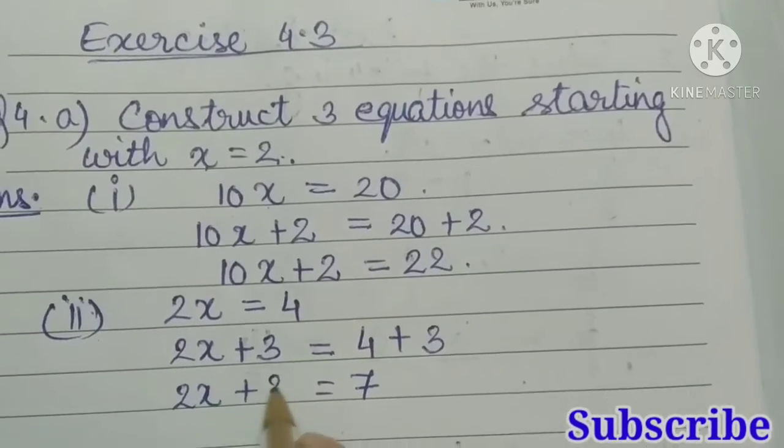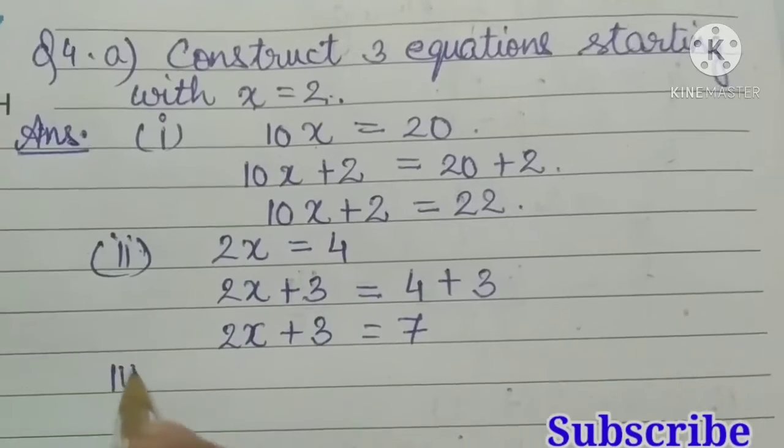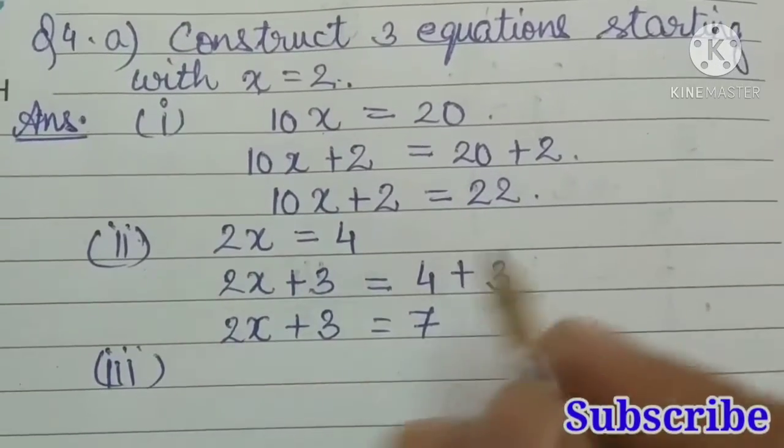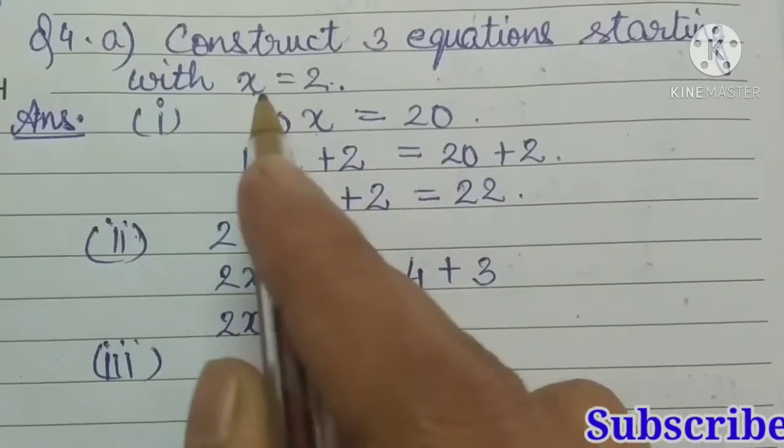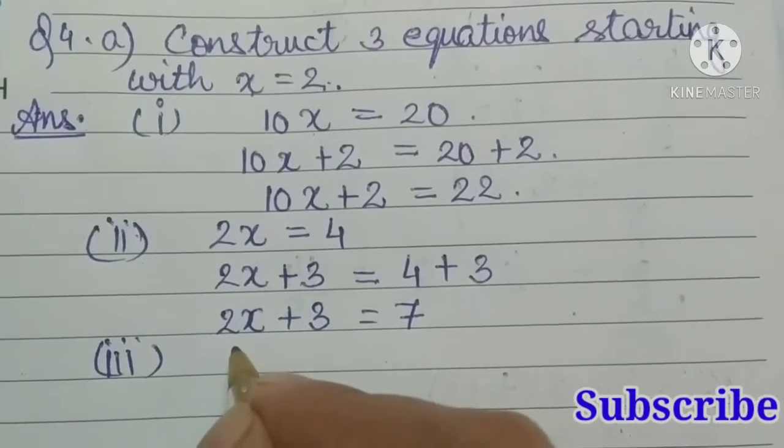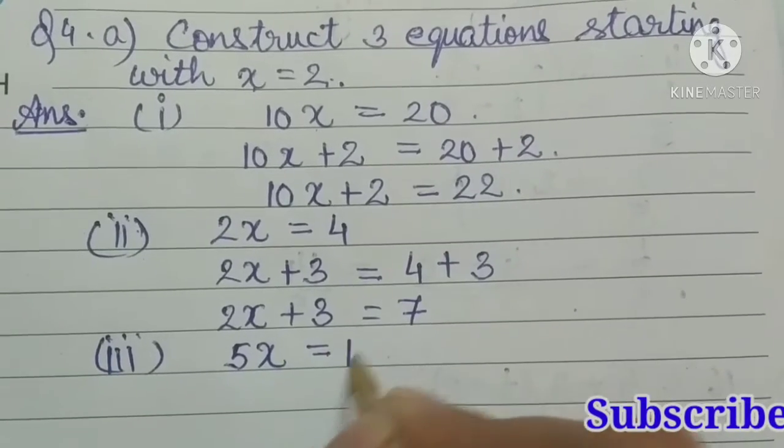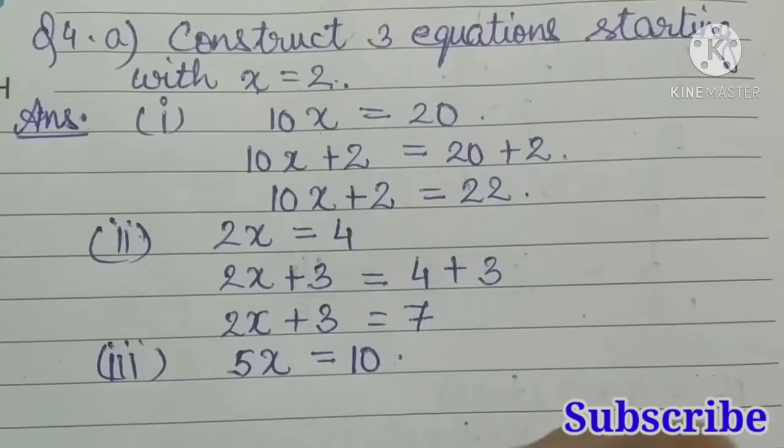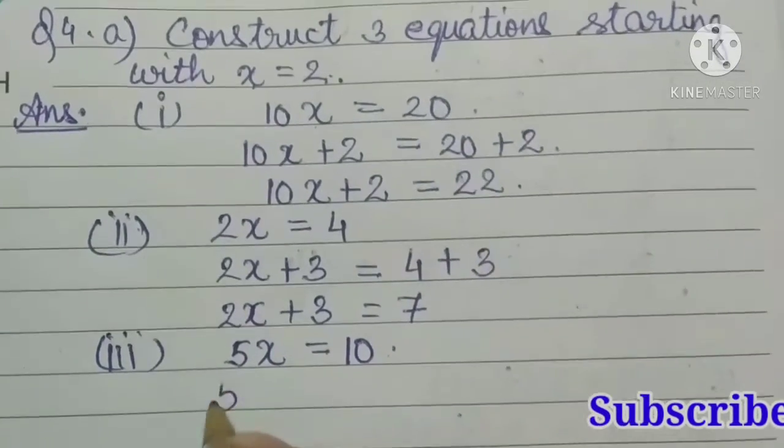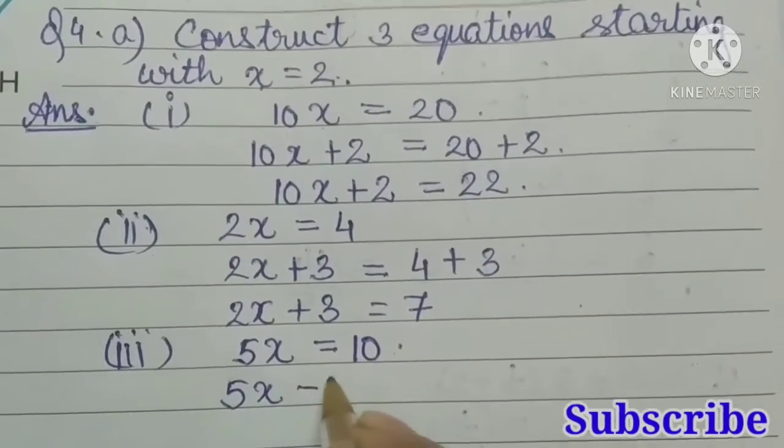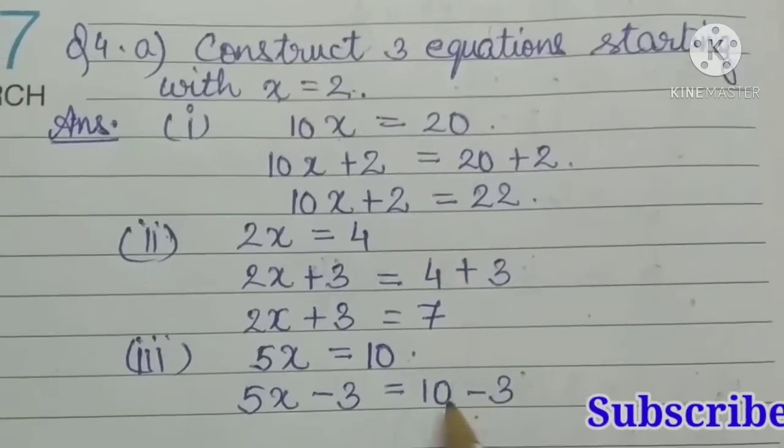Now one more we have to make. Let us multiply 5 on both sides, so we will get 5x is equal to 5 times 2 is 10. Now let us try to subtract 3 from both sides, so we will get 5x minus 3 is equal to 10 minus 3, that is 7.